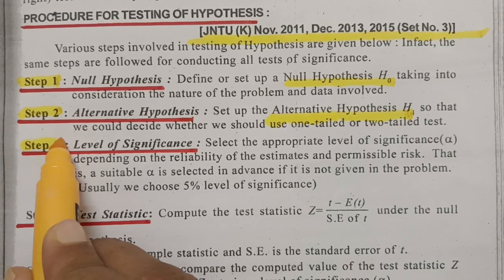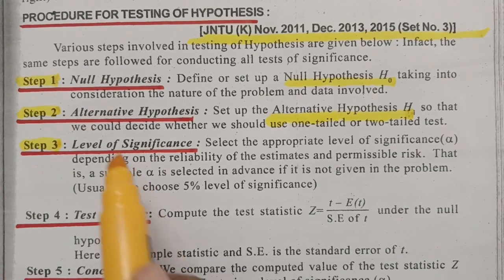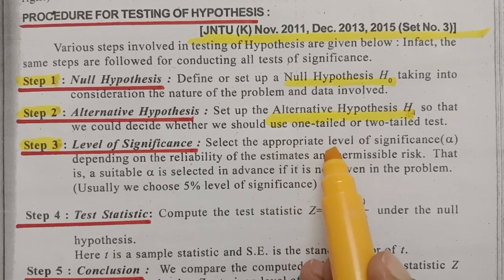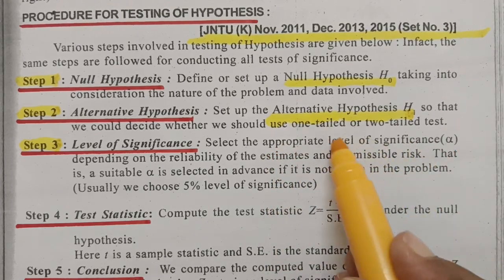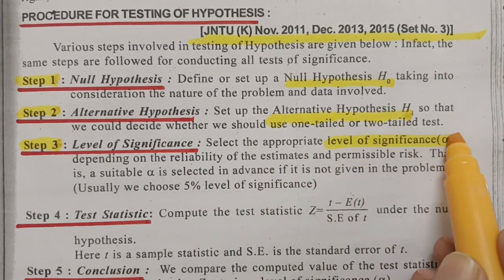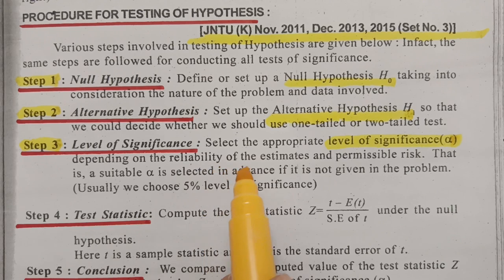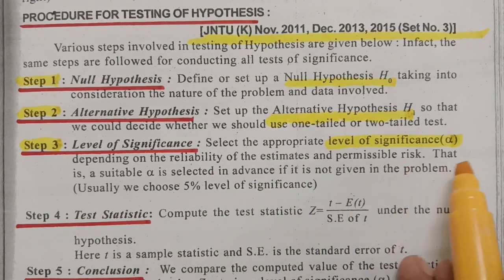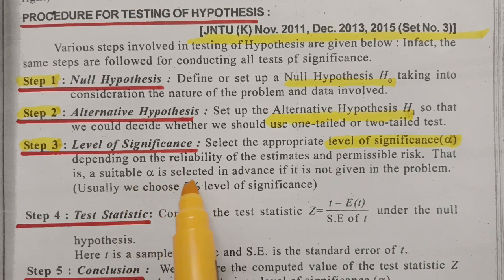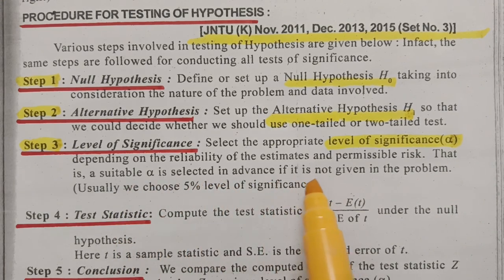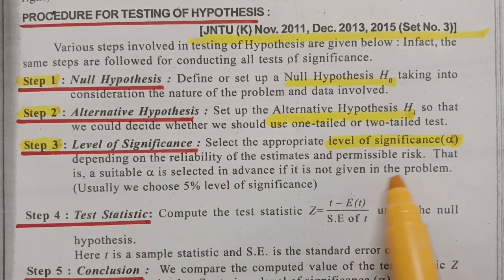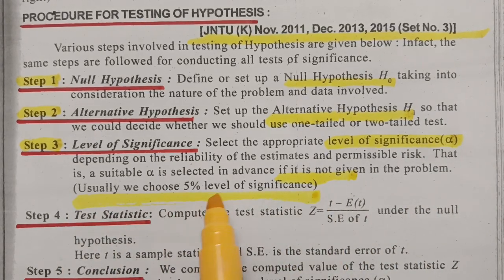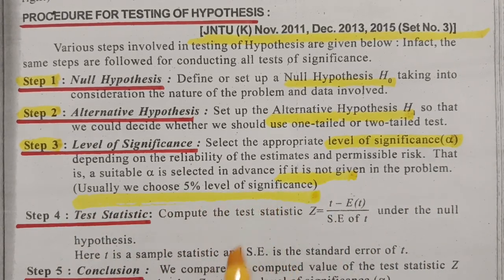Step 3 is the level of significance. Select the appropriate level of significance alpha, depending upon the reliability of the estimates and the permissible risks. A suitable alpha is selected in advance. If it is not given in the problem, we usually choose 5% level of significance.